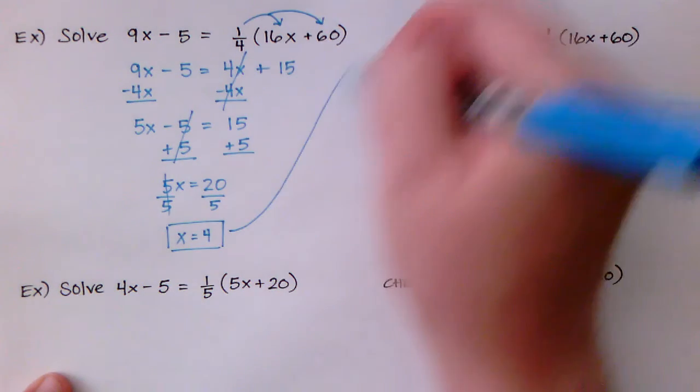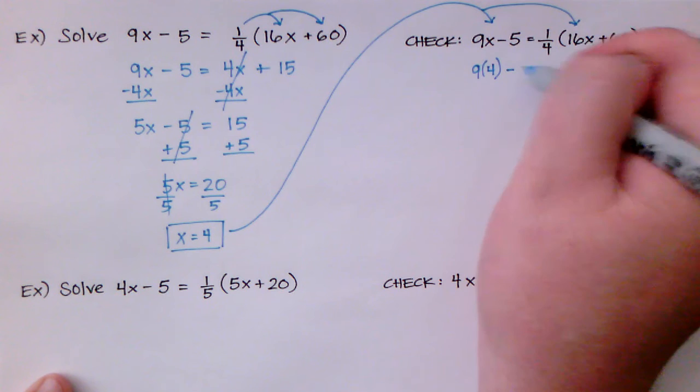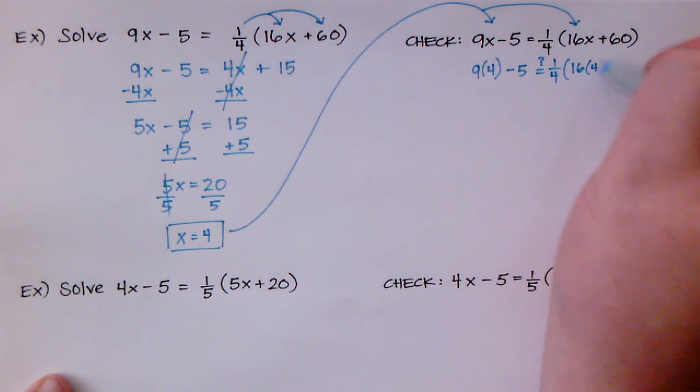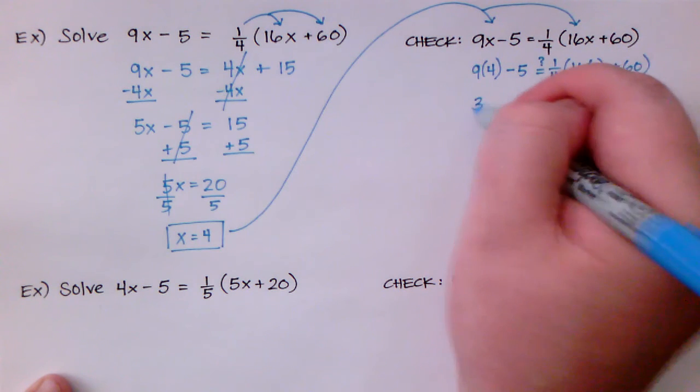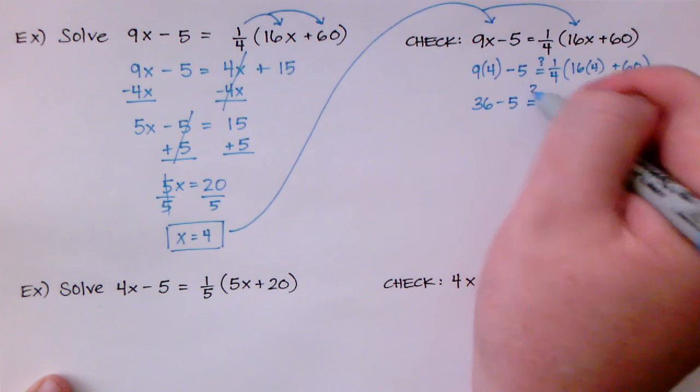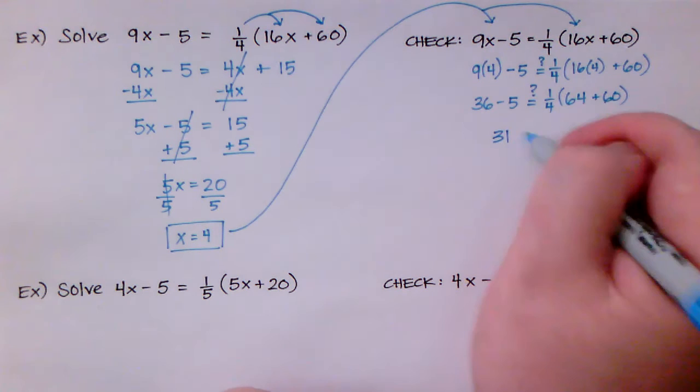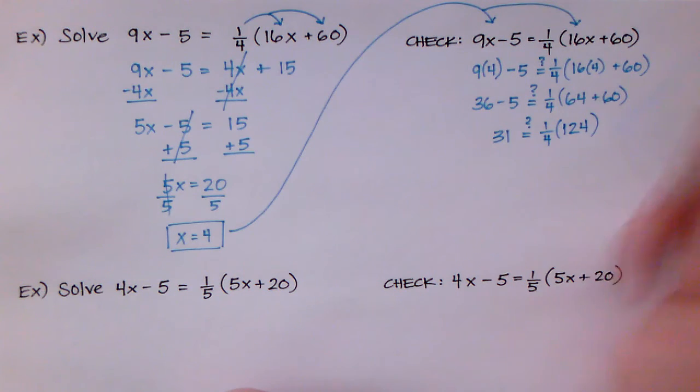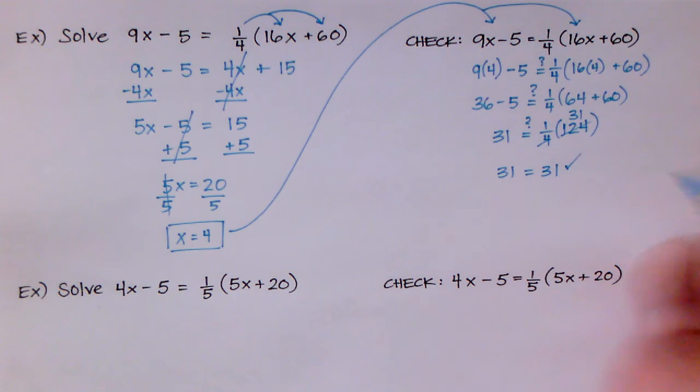So let's check it out. Let's see if it works when I plug it in to both sides. 9 times 4 minus 5, is that equal to 1 fourth times 16 times 4 plus 60? I got some work for me but let's see. 9 times 4 is 36 minus 5. And I need to do what's on the inside first. 16 times 4 is 64 plus 60. 36 minus 5 is 31 times 1 fourth. This is 124. And those can cancel each other out. They have 31. So yes 31 does equal 31. I found the correct solution.